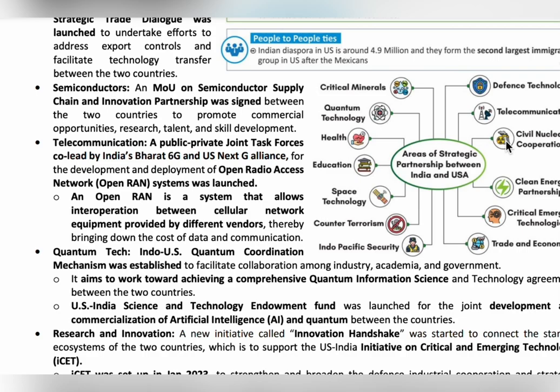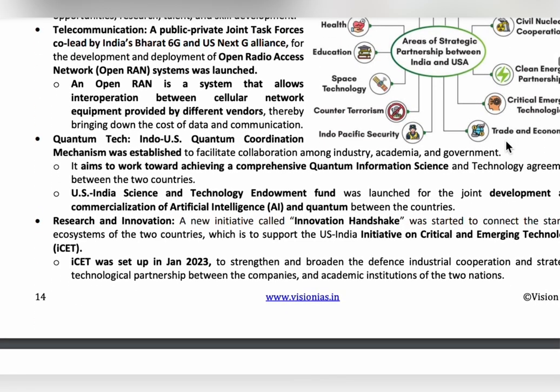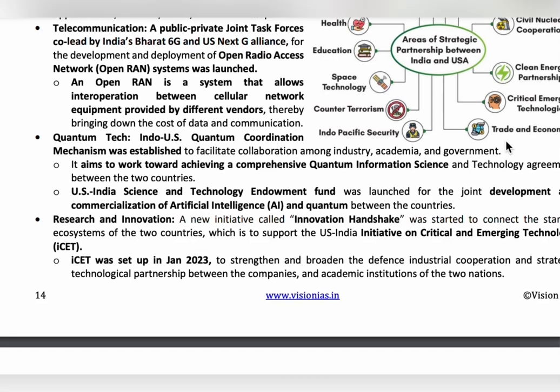An Indo-US Quantum Coordination Mechanism was established. The Initiative on Critical and Emerging Technology (iCET) was established in January 2023. It is headed by the National Security Council Secretariat in India and the US National Security Council. iCET was launched to strengthen and broaden industrial cooperation and strategic technological partnership between companies and institutions of India and the US.